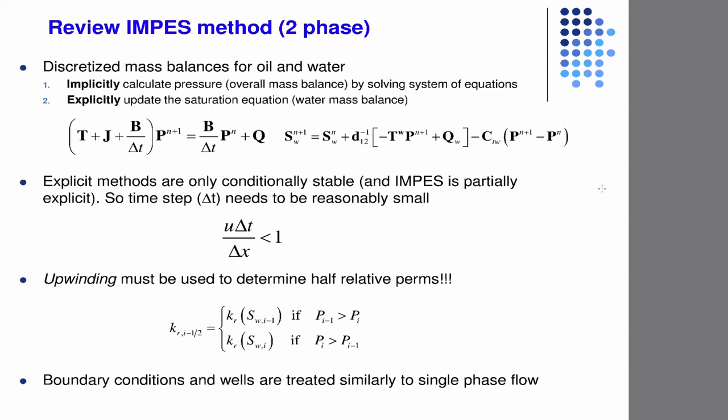I think he went through all of that. On the left is the implicit equation for pressure, and while it looks the same as before, the transmissibility matrix includes two terms — the oil transmissibility and the water transmissibility — and they're added together. So when you write it compactly it's the same equation, but the actual components inside T are a little different. The IMPES method is only partially explicit, so there is a stability condition from the CFL condition. And upwinding must be used to determine the half-relative permeability.